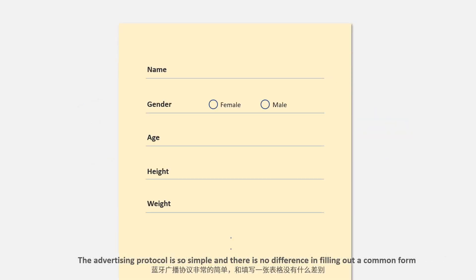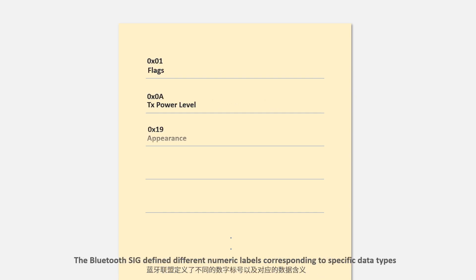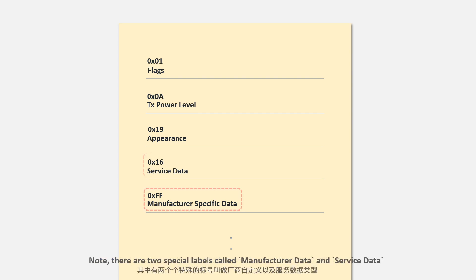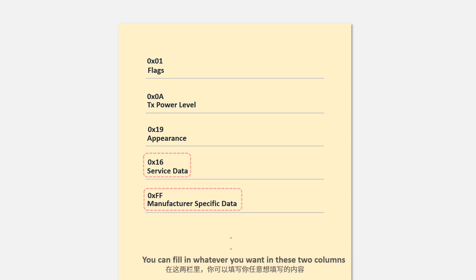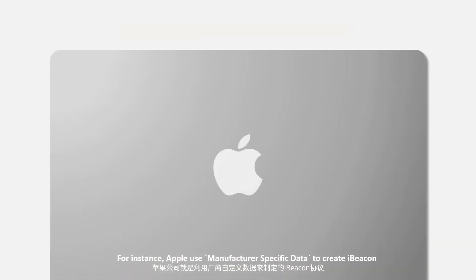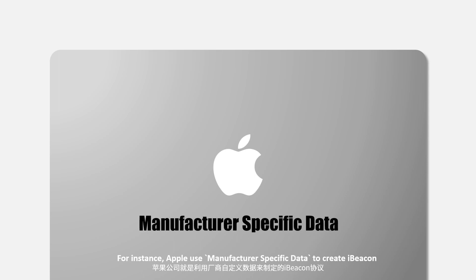The advertising protocol is quite simple — there is no difference from filling out a common form. The Bluetooth SIG defined different numerical labels corresponding to specific data types, so the communicating parties can understand each other. Notice there are two specific labels called Manufacturer Data and Service Data — you can fill in whatever you want in these two fields. Many Bluetooth beacon protocols on the market today use these two data types to customize their own protocols. For instance, Apple used manufacturer-specific data to create iBeacon.